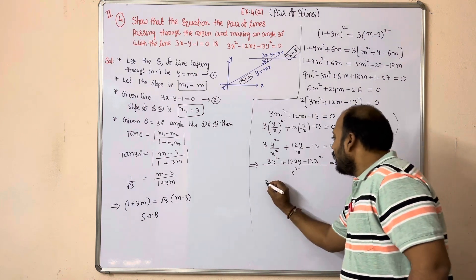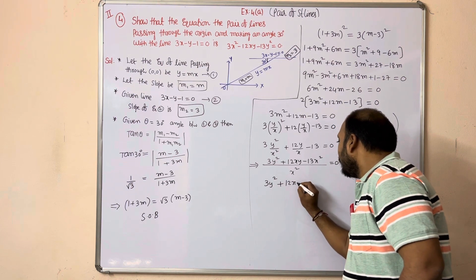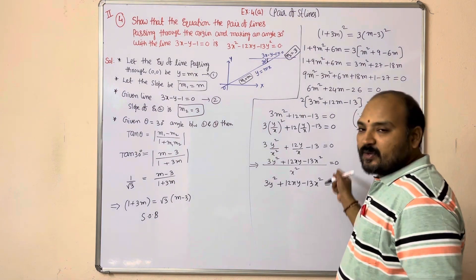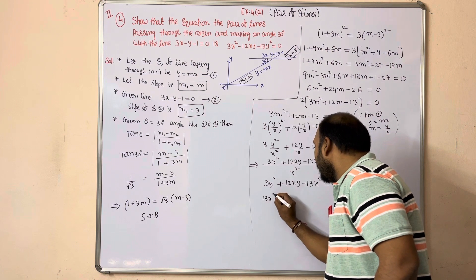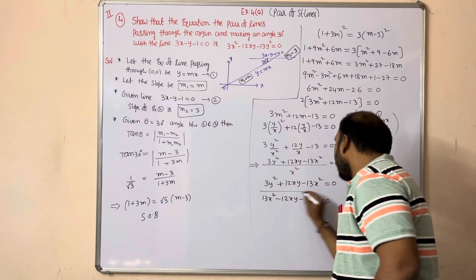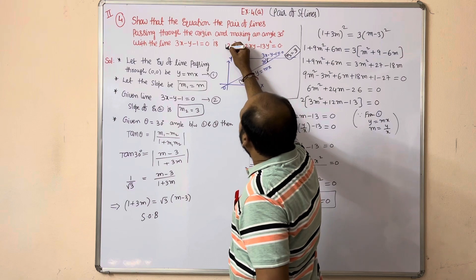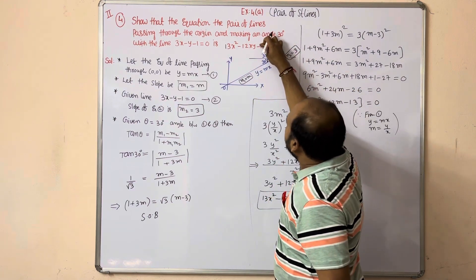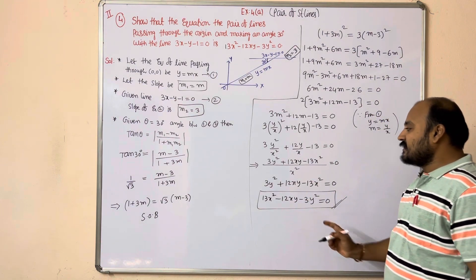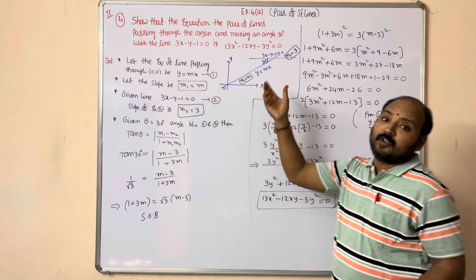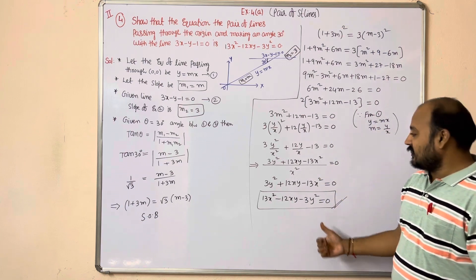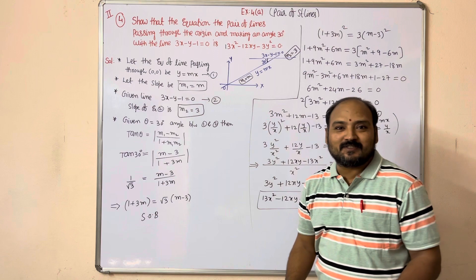So 13x square minus 12xy minus 3y square is the required pair of lines equation. One of the lines is making an angle 30 degrees with the given line. I hope you understand this, friends. Thank you.